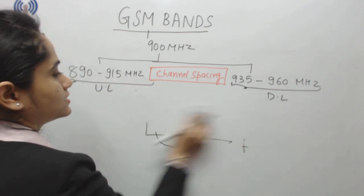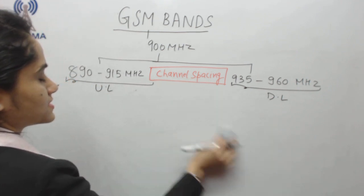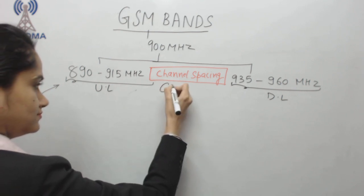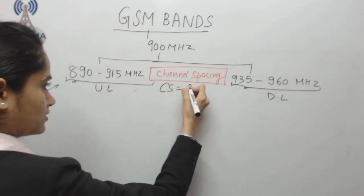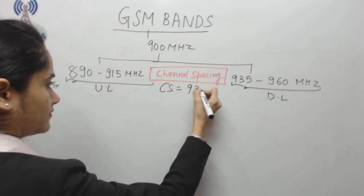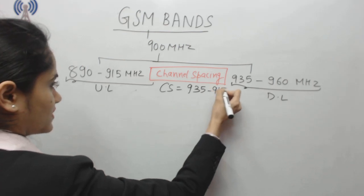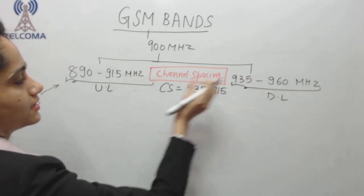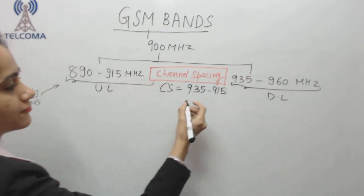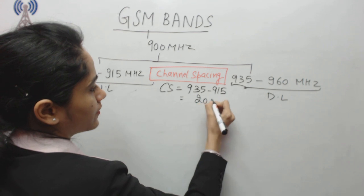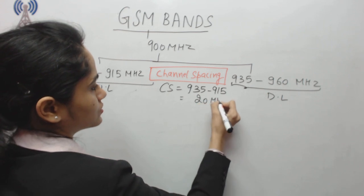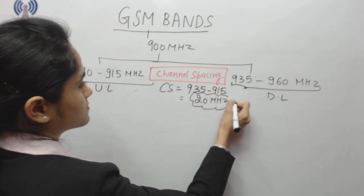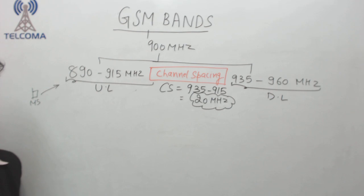If we calculate the total channel spacing for the 900 MHz band: CS = 935 minus 915, which equals 20 megahertz. So we have provided 20 megahertz as channel spacing in this band.